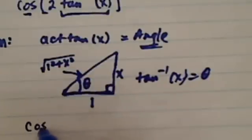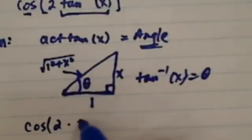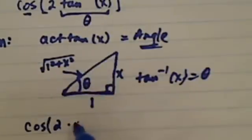So originally what I was given is 2 times this angle of theta, so you have 2 theta.